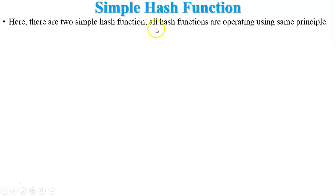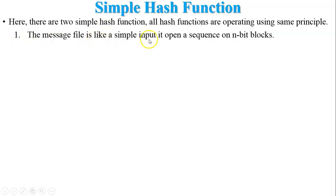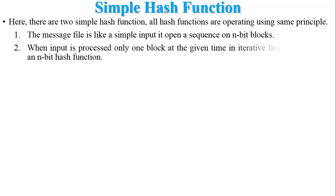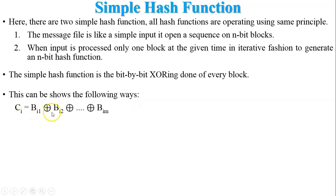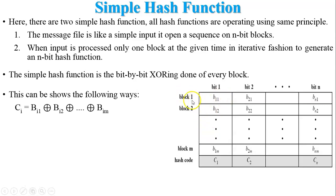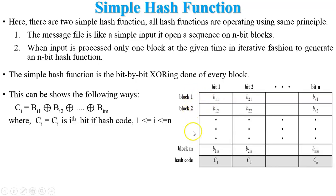Now, simple hash functions: all hash functions operate using the same principle. For the first simple hash function, the message file is treated as a sequence of n-bit blocks — if the message file is too long, it is divided into n-bit blocks. Each successive n-bit block is processed one at a time in an iterative fashion to generate an n-bit hash. The simplest hash function is bit-by-bit XOR of every block, represented as: ci = bi1 XOR bi2 XOR ... XOR bim.